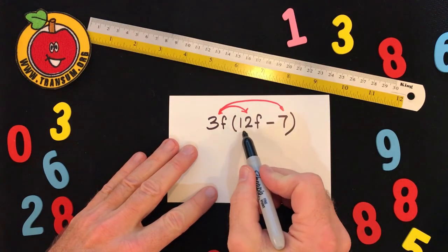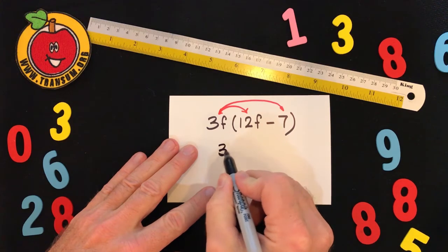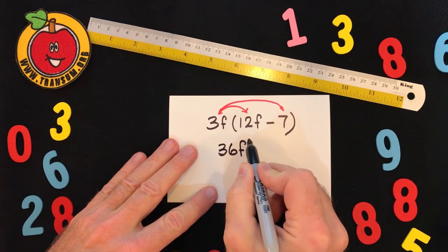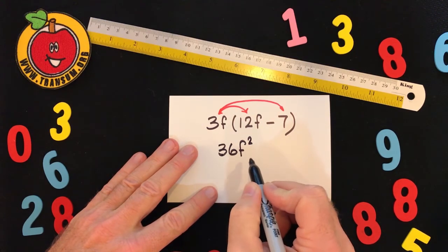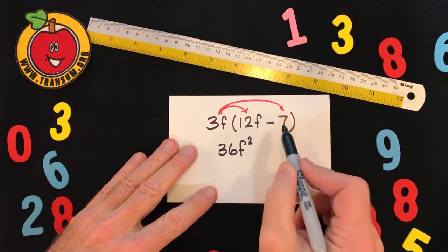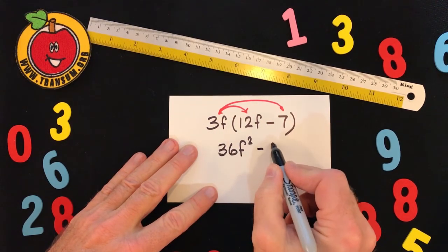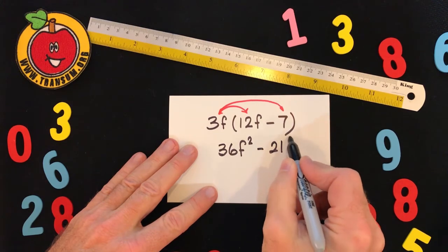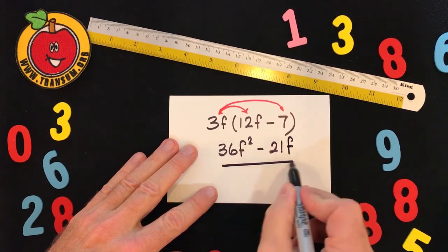So let's get straight on with it and multiply the 3f by the 12f. That will give us 36f squared. And then multiplying the 3f by the negative 7 will give us minus 21f. And there is the answer to that question.